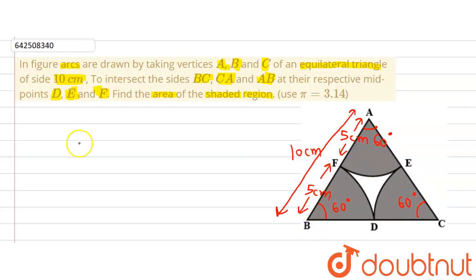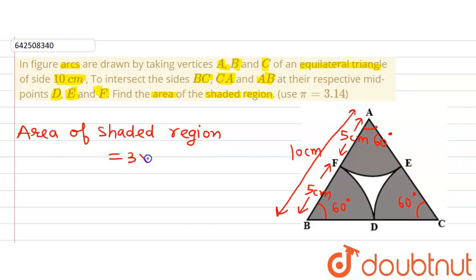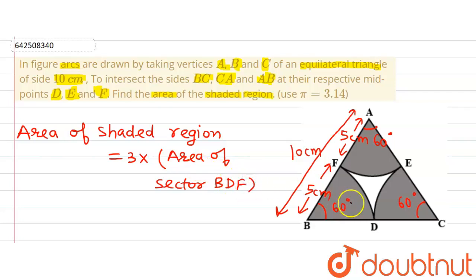Now to find out the area of the shaded region, it can be observed that the area of the shaded region will be equal to 3 multiplied by the area of any one of the sectors — for example sector BDF. All three sectors have the same radius and the same central angle of 60 degrees. Therefore, finding the area of one sector and multiplying by 3 gives the total shaded area.